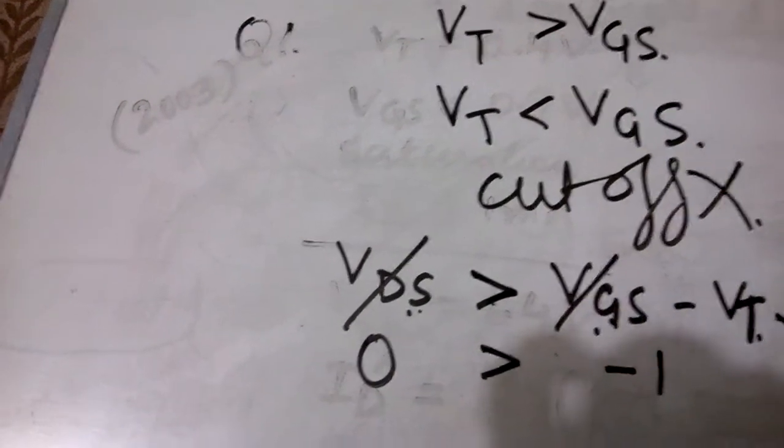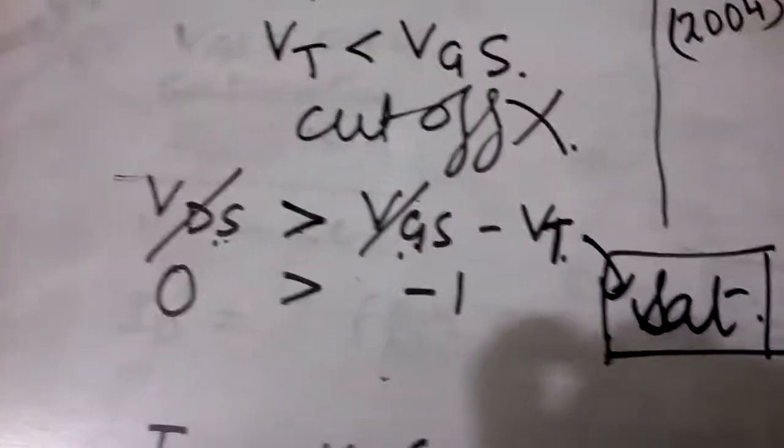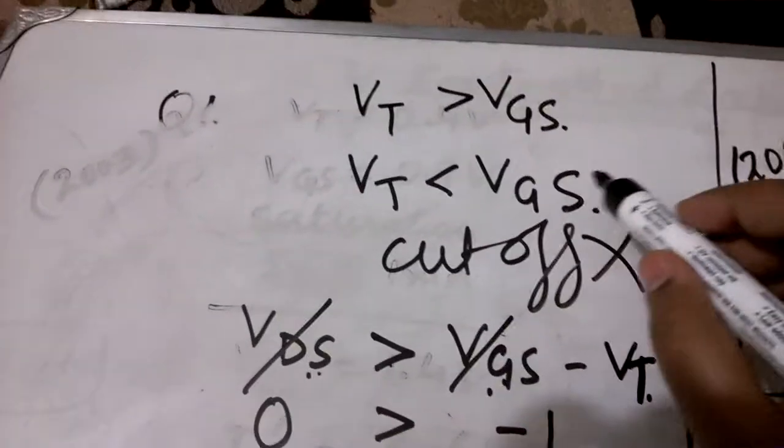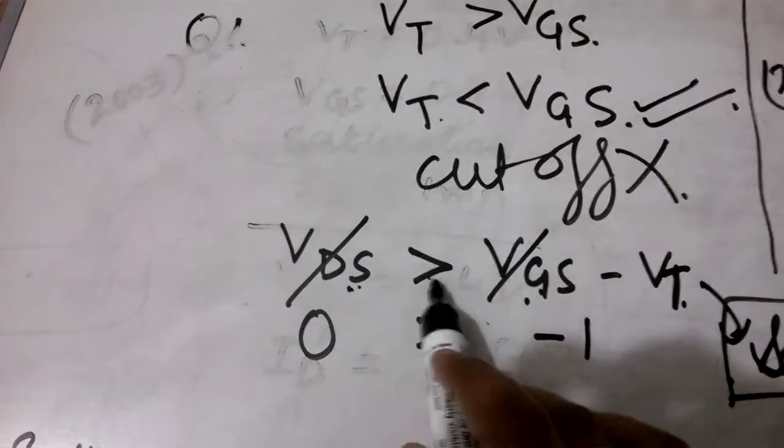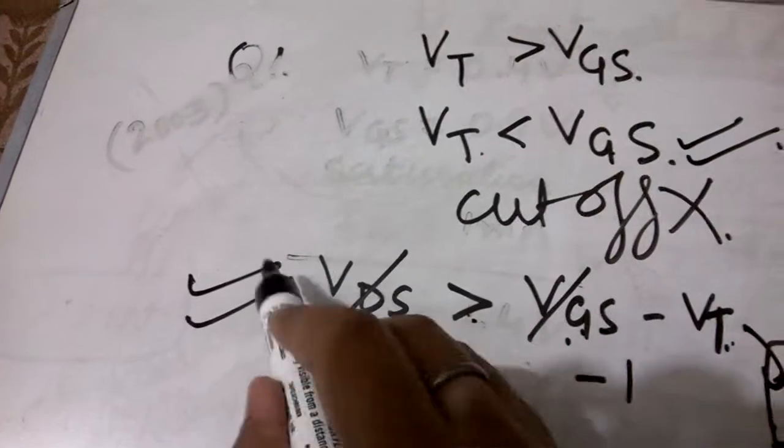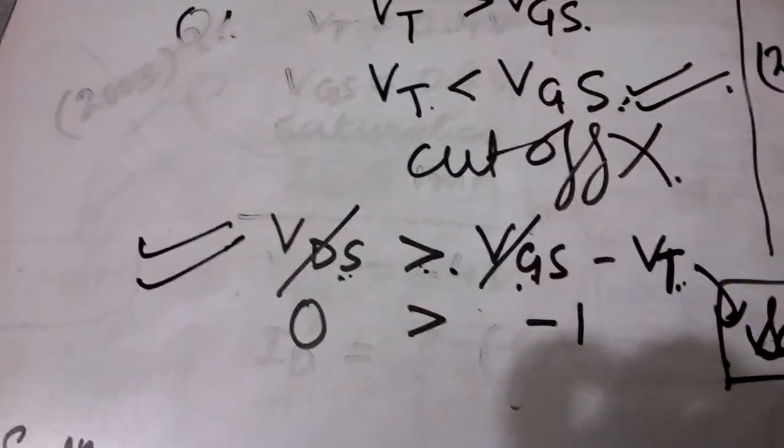We remember when VDS was greater than VGS minus VT, the device used to be in the saturation region. So from here we can predict that the device is in saturation region. I'll repeat how we did this: first we found that VGS is greater than VT, this condition is satisfied. Then we proved that VDS is greater than VGS minus VT. So these two conditions prove that the device is in saturation.